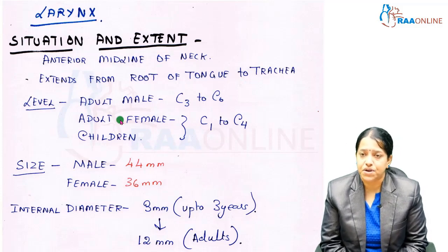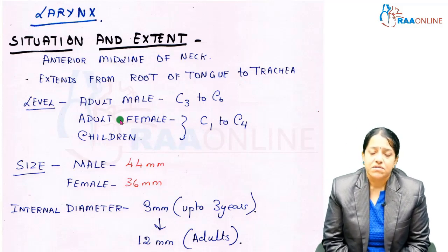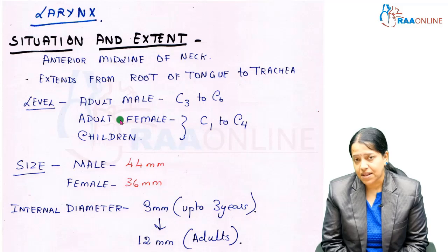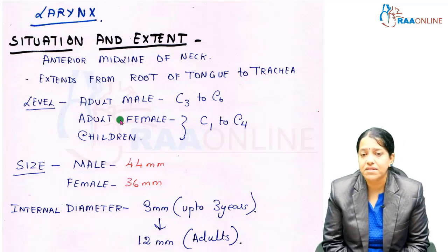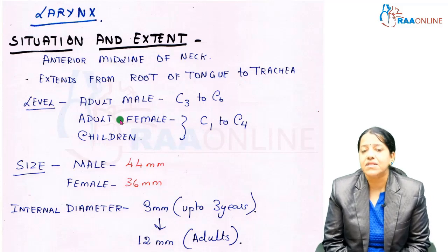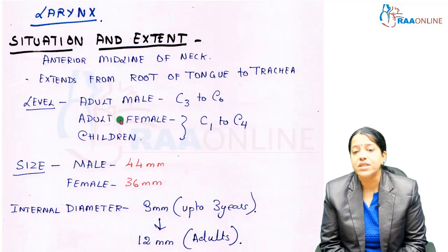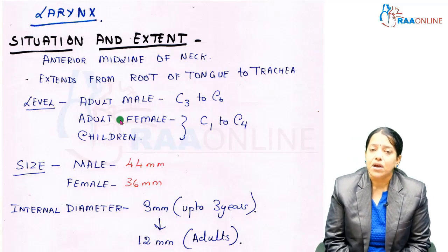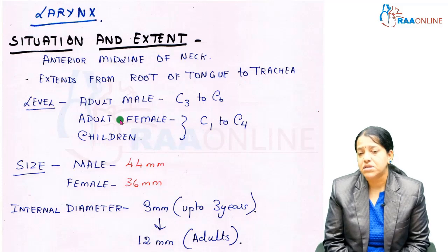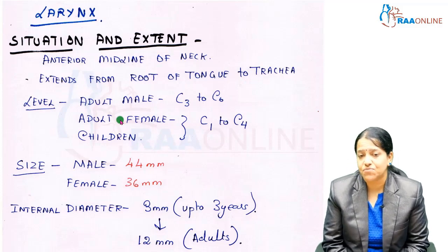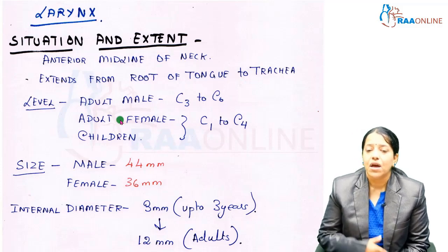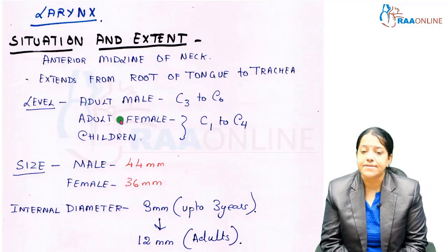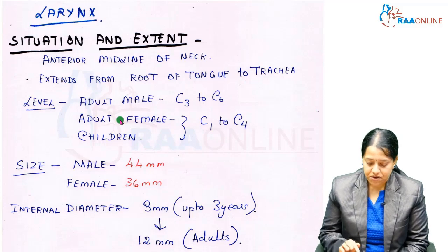In terms of size, the larynx is larger in males at 44 millimeters, whereas in females it is 36 millimeters. The internal diameter increases from childhood — up to three years it is only 3 millimeters, whereas in adults it is about 12 millimeters.